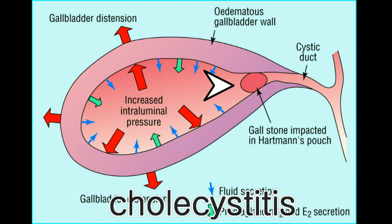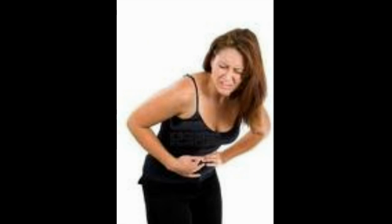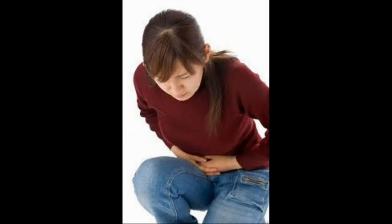When this occurs, the gallbladder becomes inflamed and swollen. The most common symptom associated with acute cholecystitis is abdominal pain in the right upper abdomen. This attack may be precipitated by food, especially after a fatty meal. The pain may be constant and severe. At times, the pain may radiate to the right shoulder. There may be fever, chills, and nausea.